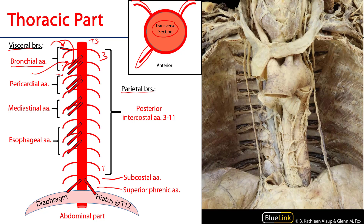There are also pericardial arteries — very tiny branches that serve the posterior aspect of the pericardium with blood. We have mediastinal arteries, which supply various elements of the mediastinum, especially lymph nodes. And then finally, most distally among all of these visceral branches, are the esophageal arteries.